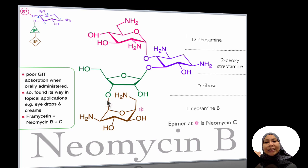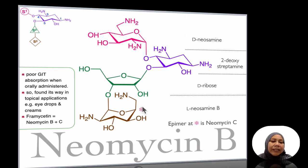Most aminoglycosides are usually given by injection. In the case of neomycin B, it is given as a topical application. There is another neomycin derivative called framycetin, which is actually a mixture of neomycin B and C.